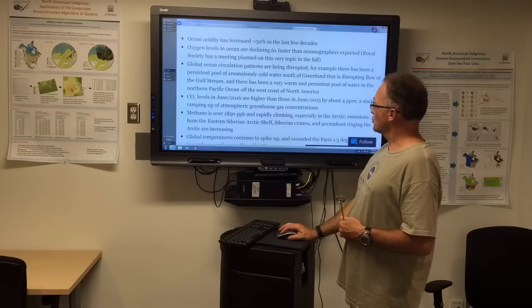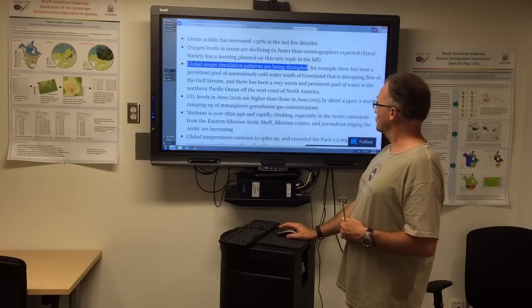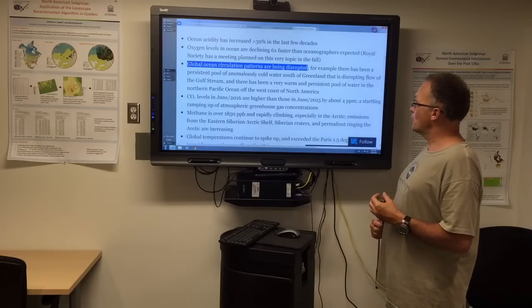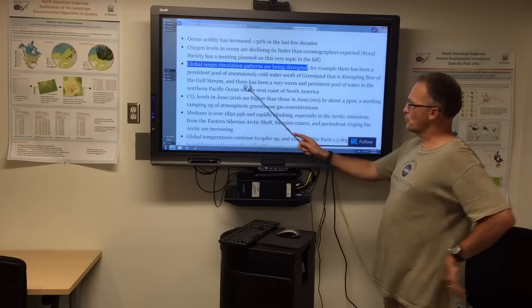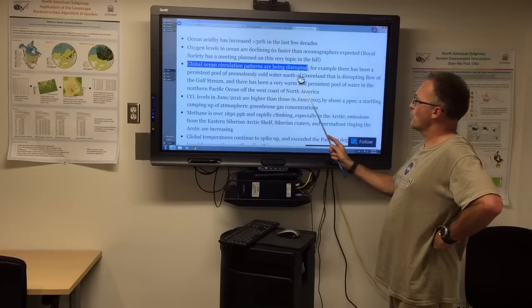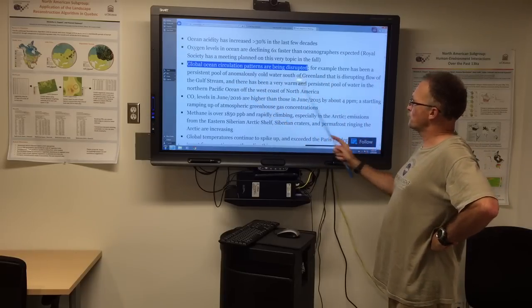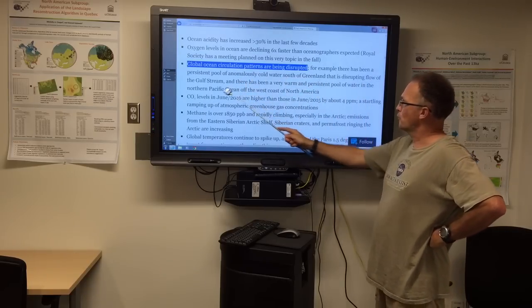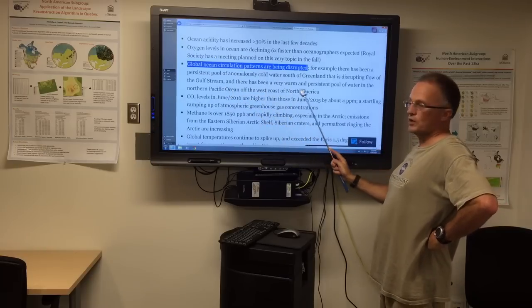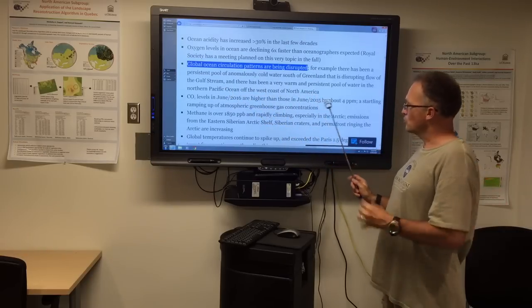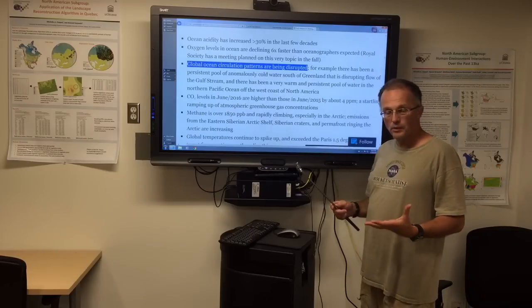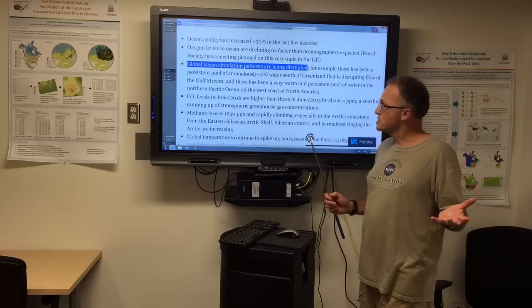Okay, global ocean circulation patterns are being disrupted. We know this is happening. There's a persistent pool of anomalously cold water south of Greenland disrupting flow of the Gulf Stream. There's been very warm, persistent pool of water in the northern Pacific Ocean off the west coast of North America. So the ocean patterns, the ocean currents are reconfiguring on our planet. This is an enormous change.